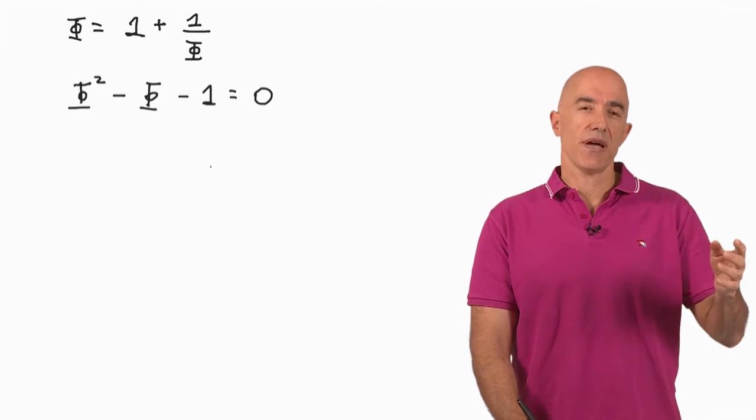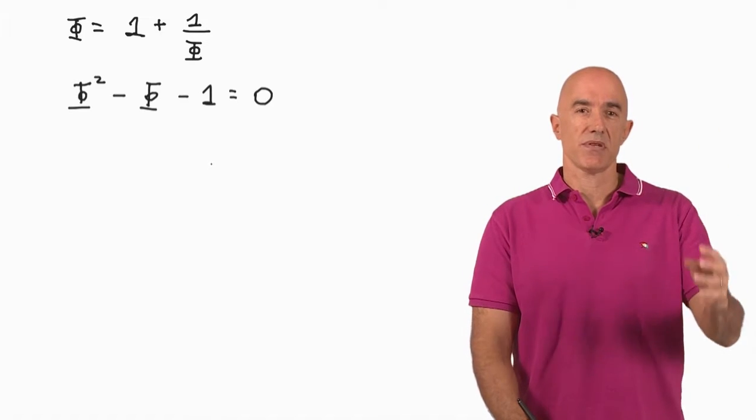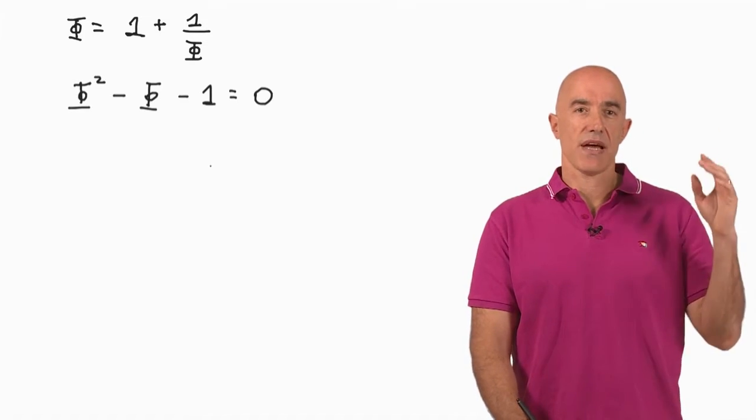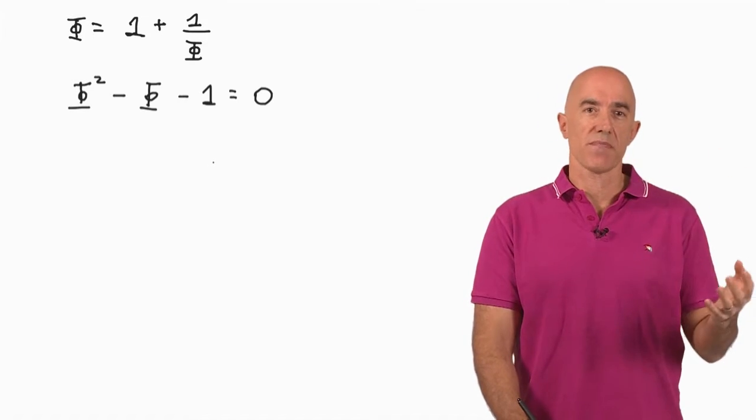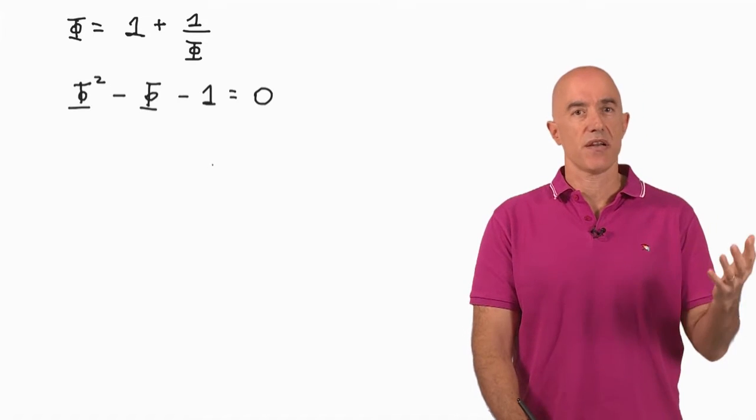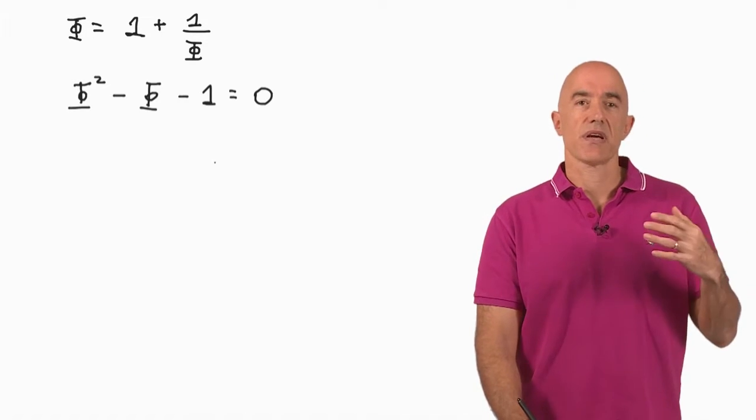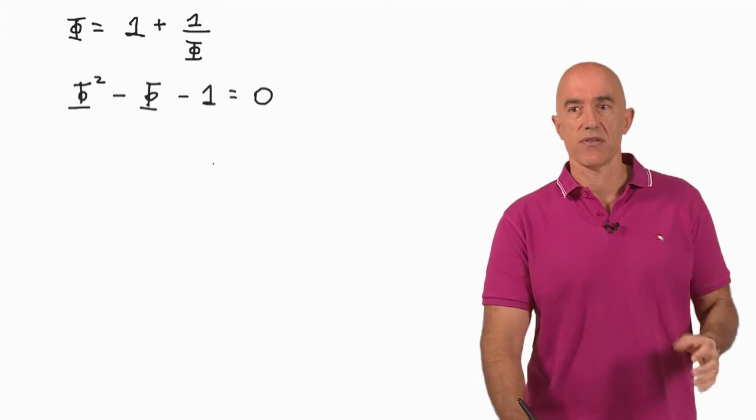We can use the quadratic formula to solve for Phi. If you have an equation AX squared plus BX plus C equals zero, you know that X is equal to negative B plus or minus the square root of B squared minus 4AC, divided by 2A. So we can apply the quadratic equation to solve for Phi.